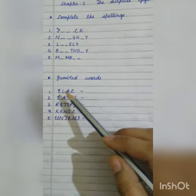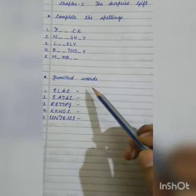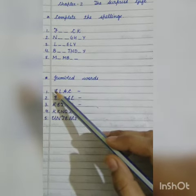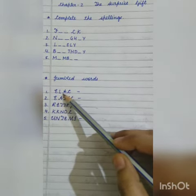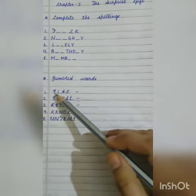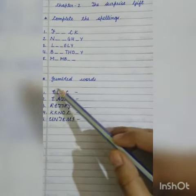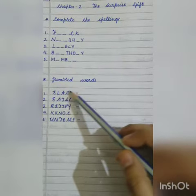Now these letters are jumbled. We have to rearrange them to form a meaningful word. Like this first word, E L A C. Which word can it be? E L A C. These four letters we have to rearrange.